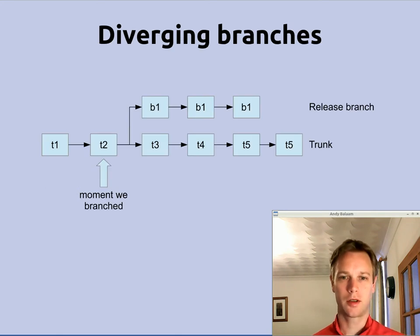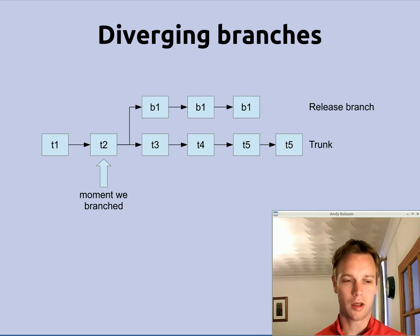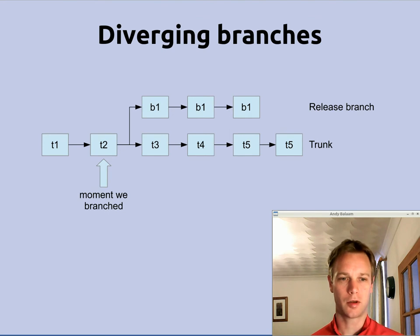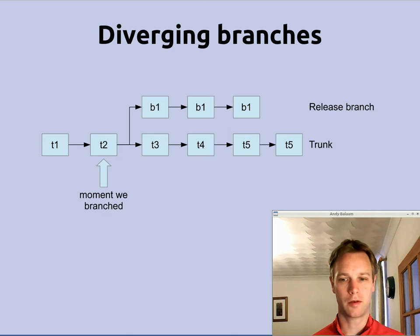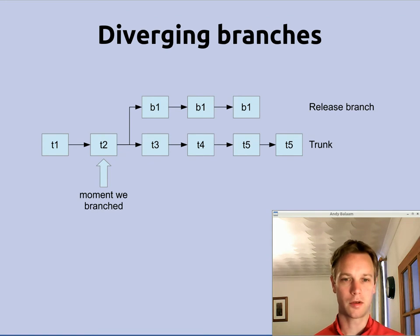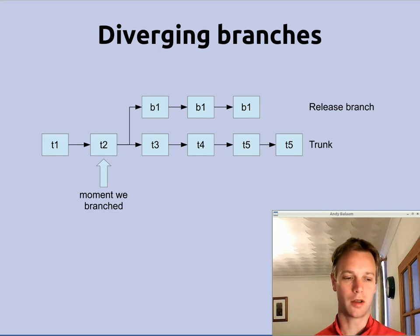So, diverging branches — what I mean is there are two or more different versions of the project you are working on. Each of the boxes here is a version of your code, your whole source code or whatever you are working on. The arrows are changes that happened. So in the trunk we have got T1, T2, T3 — different versions that are going on.